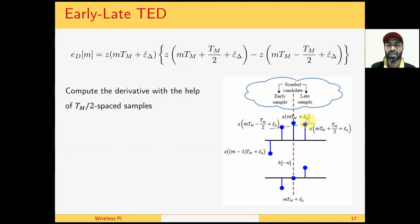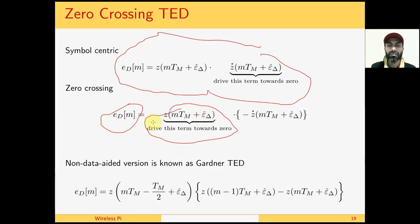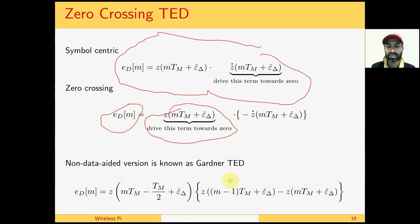It turns out that if we use the same samples with a negative sign of the derivative — meaning we take the derivative as this-minus-this in the early-late case — then interestingly the Z-dot term goes towards zero. This gives a timing error detector known as the Gardner TED, which is by far the most popular timing error detector in timing synchronization. The expression looks very similar to a matched filter output multiplied by a derivative — in this case a difference of two terms — and works at two samples per symbol. Z(M-1) is the previous sample and Z(M+TM) is the future sample.